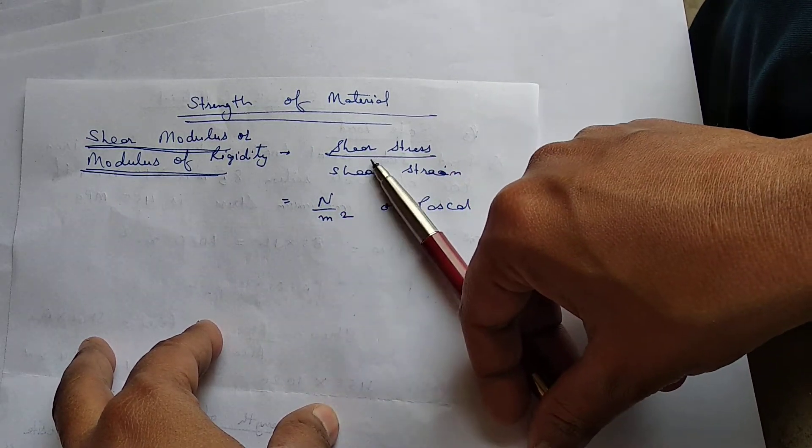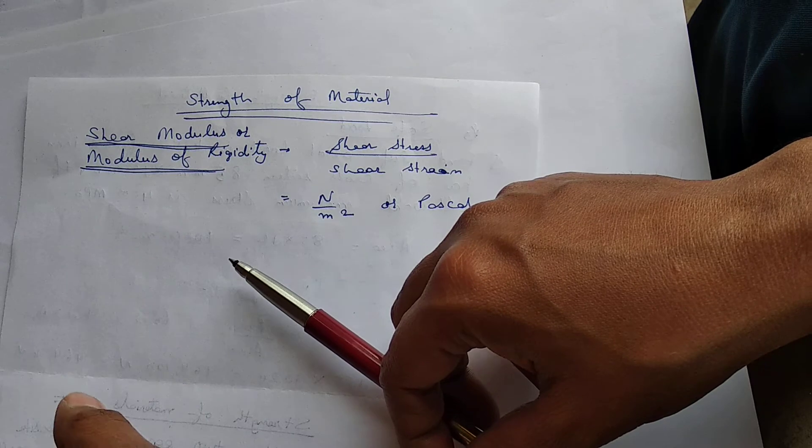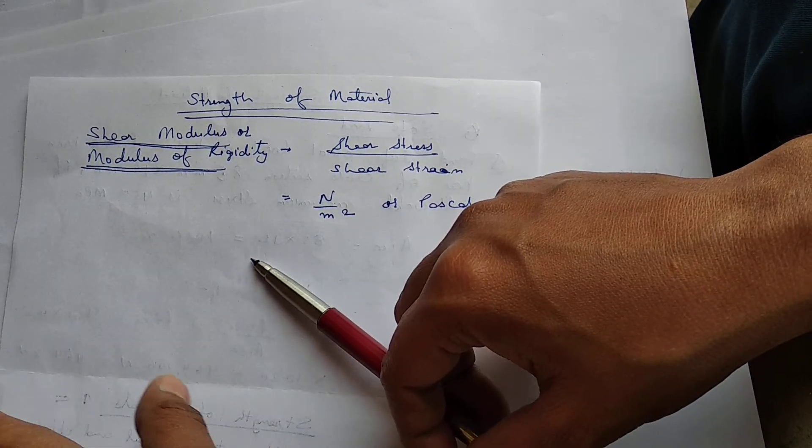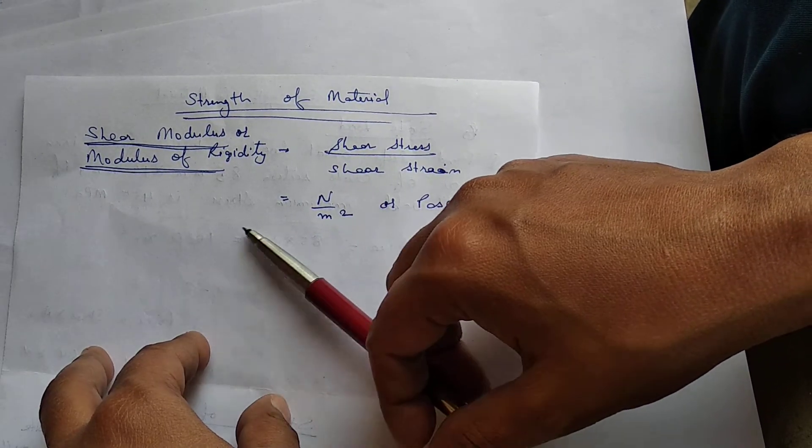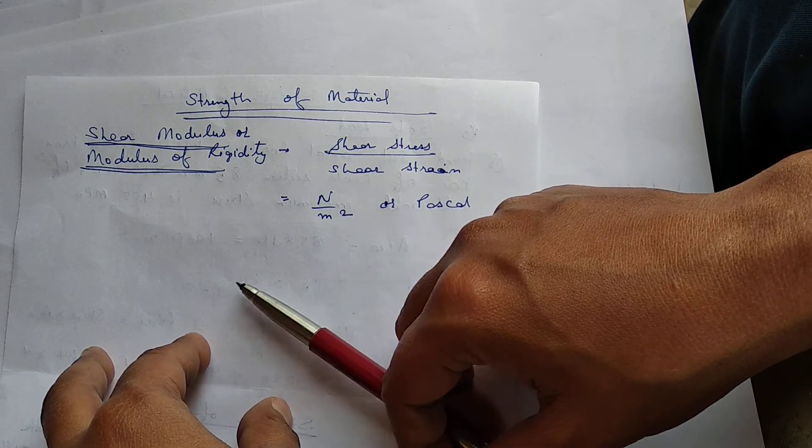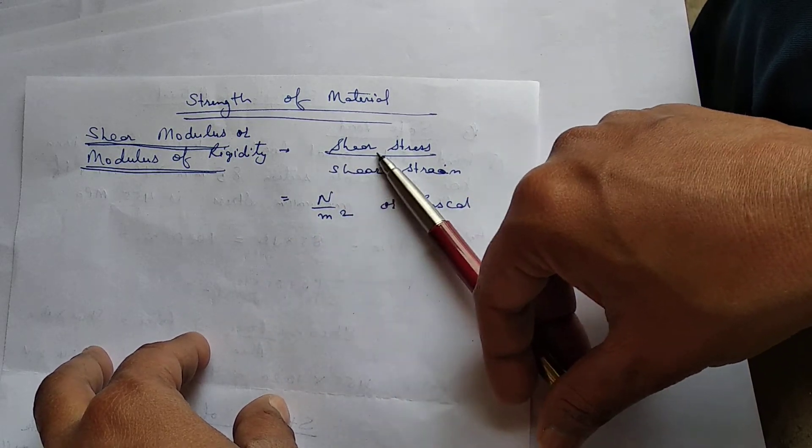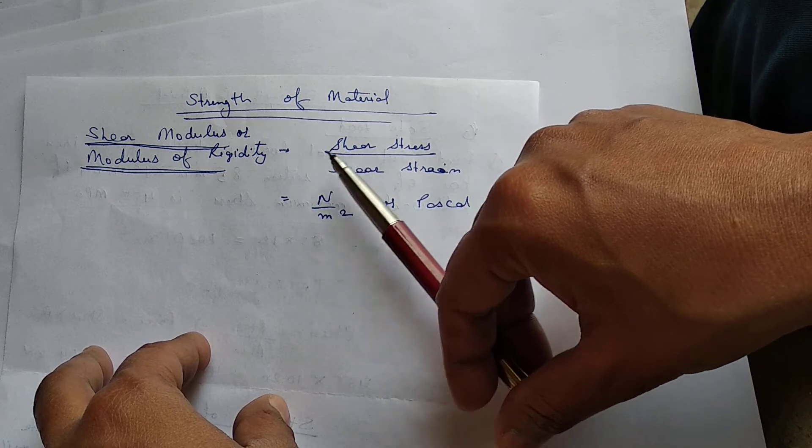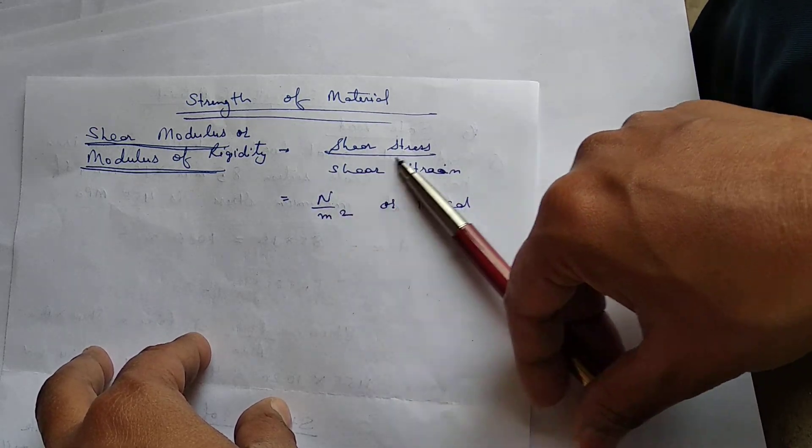Shear stress is the stress that is produced due to two forces acting on one section of the object. By this, there is shear state and due to shear state there is some stress and there is some strain that we have to find out.